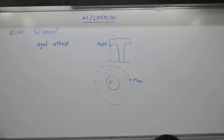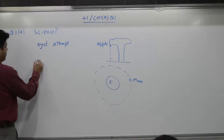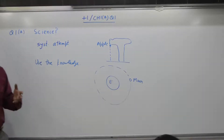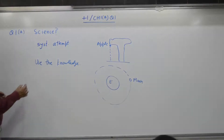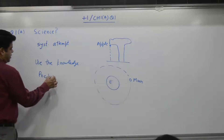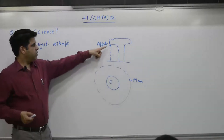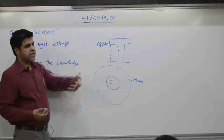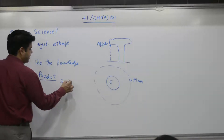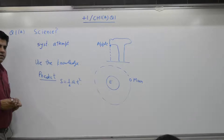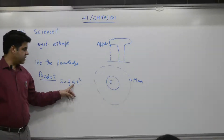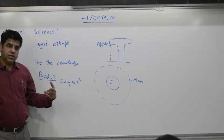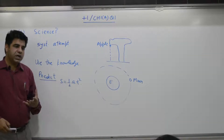The second part is: use the knowledge so gained. For what purpose? To predict. If a scientist has come out with a formula — S is equal to ut plus half at squared — suppose u is 0, so S equals half at squared. If S is known and acceleration due to gravity on the surface of earth is 9.8, you can find out time. Even before performing the experiment, you can predict.